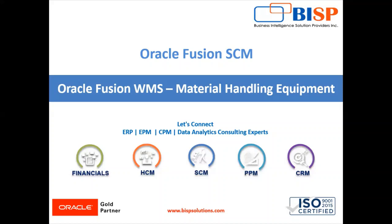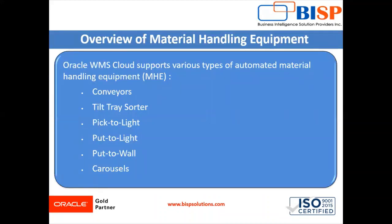We can move items and materials from one location to another within the defined area in WMS. Oracle WMS Cloud supports various types of automated material handling equipment such as conveyors, tilt-tray sorter, pick-to-light, put-to-light, put-to-wall, and carousel.